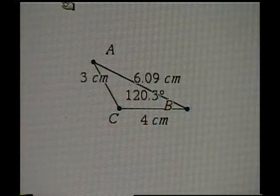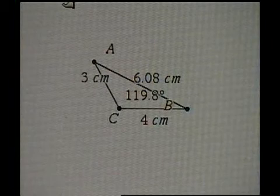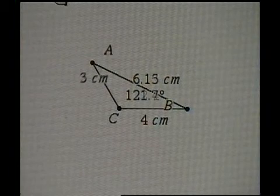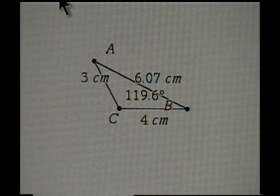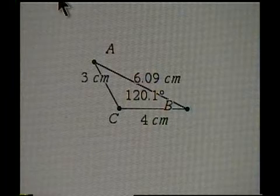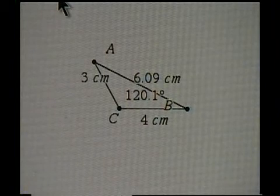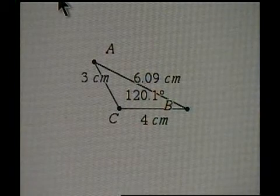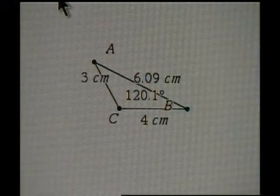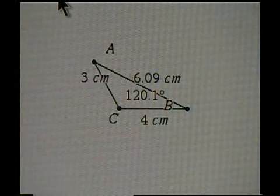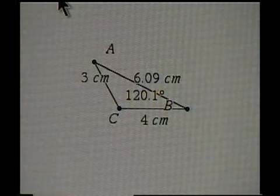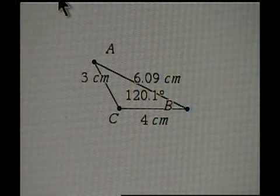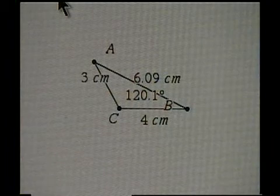And now to a nice round number of 120 degrees. 120 degrees gets us 6.09 indicated for 120.1 — let's call that 6.08 to correspond with 120.